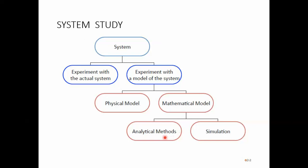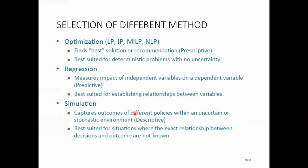When the variables are random in nature, then we use simulation. But today in particular, we will be talking about optimization — which one to choose — and in today's discussion we are using the optimization method. Some of the different techniques are linear programming, integer programming, mixed integer linear programming, and nonlinear programming. In optimization, we try to find the best solution or get a recommendation, and these are best suited for deterministic problems with no uncertainty.